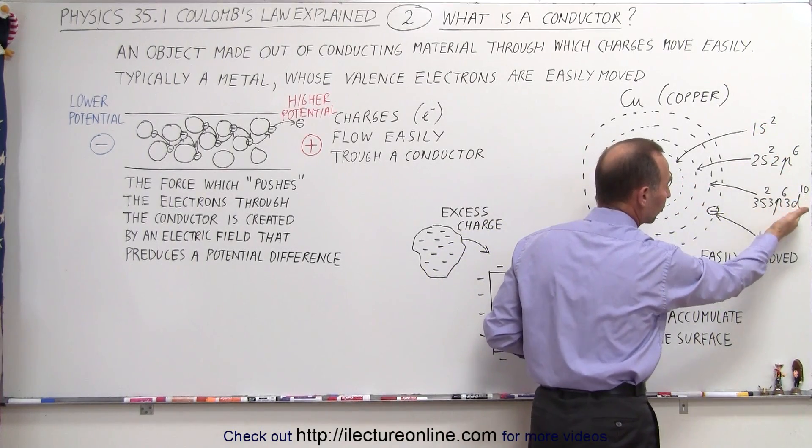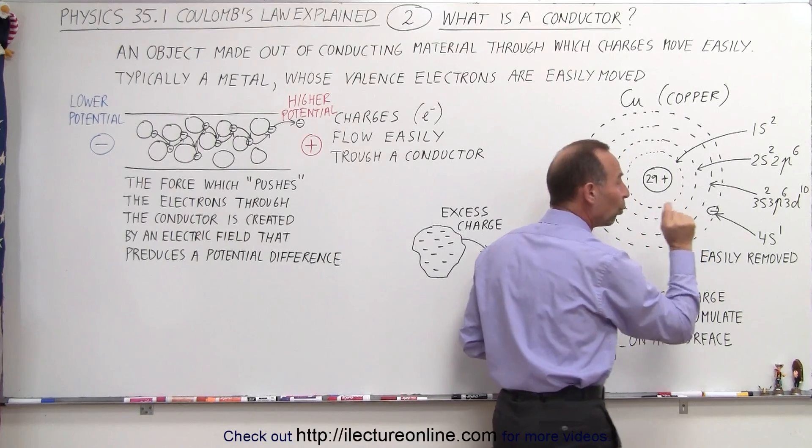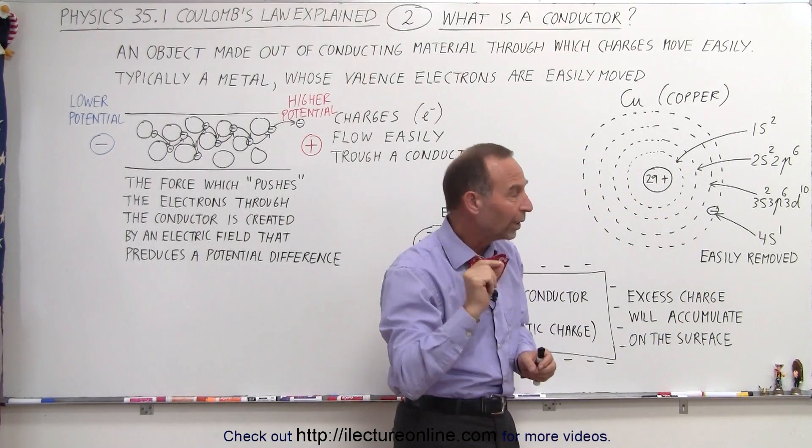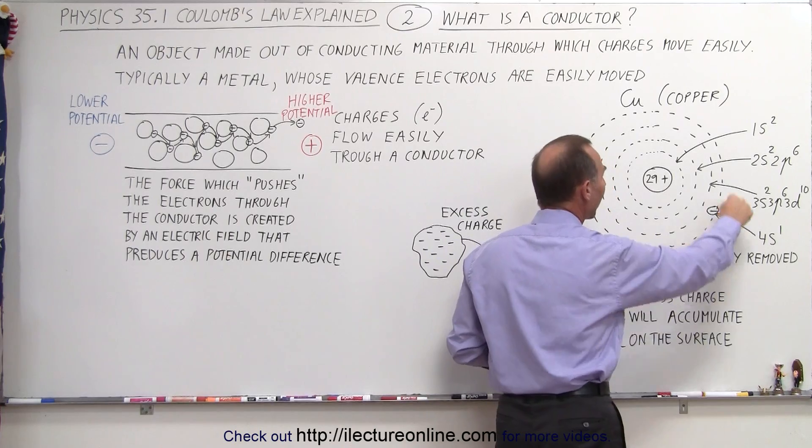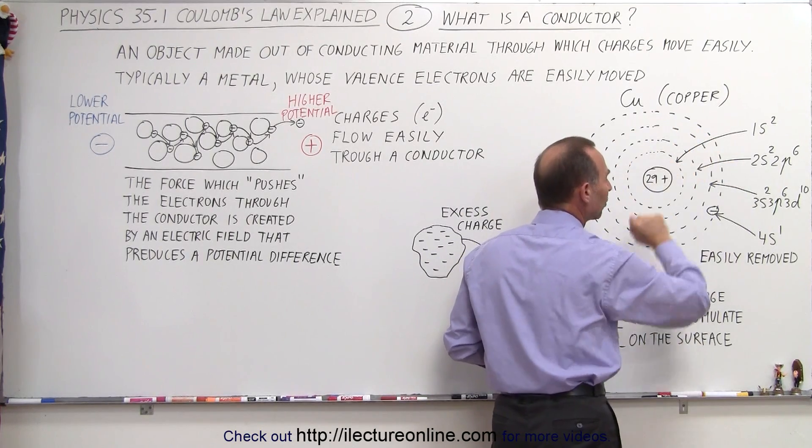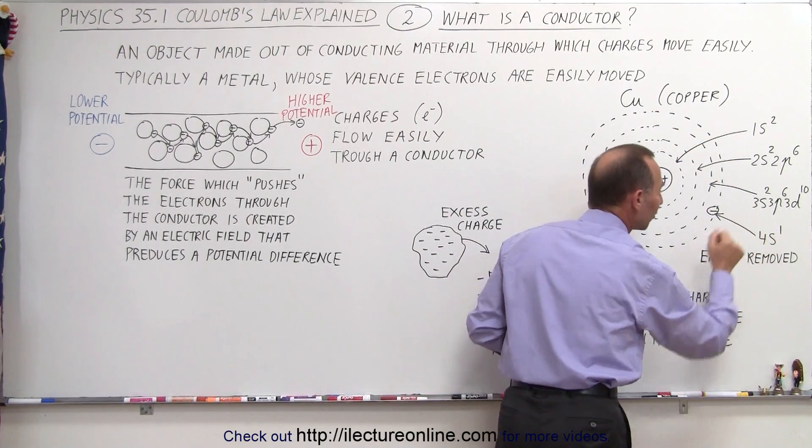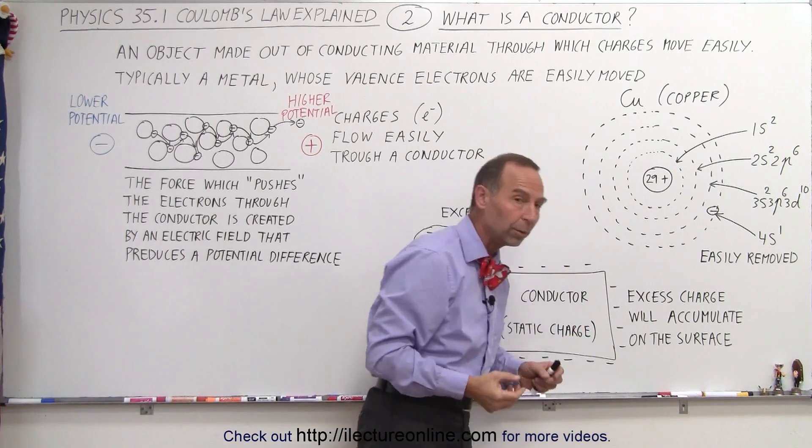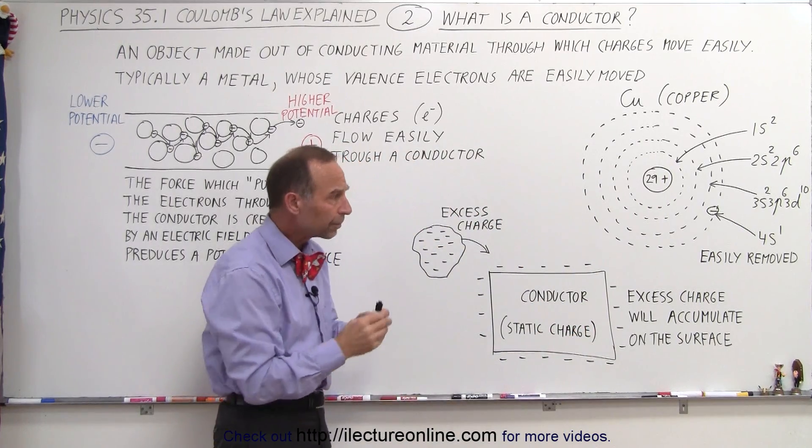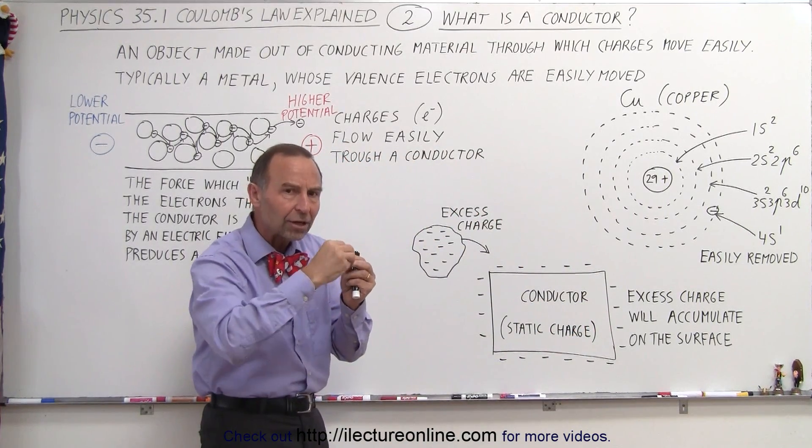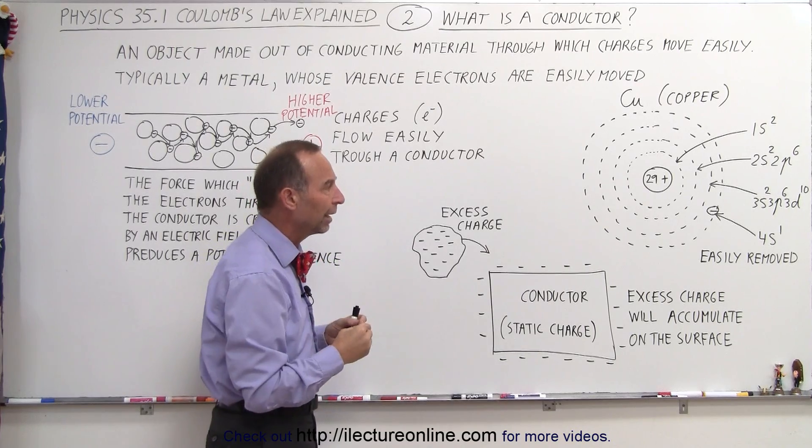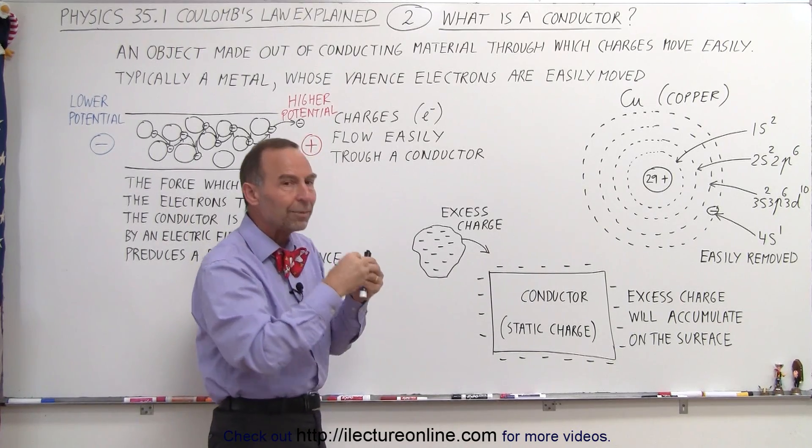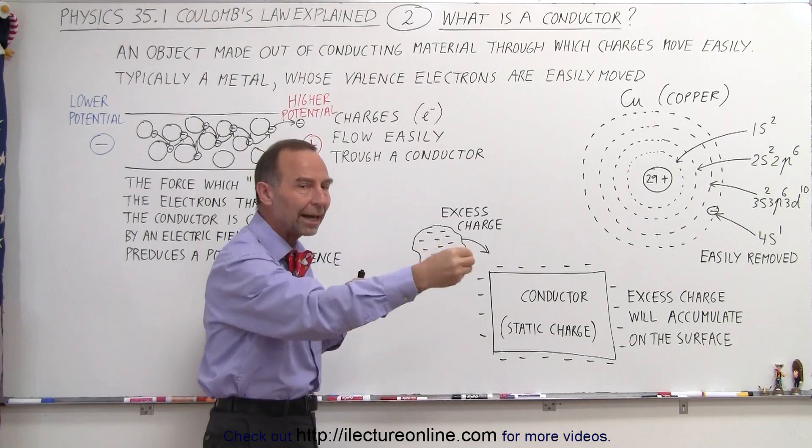This leaves one additional electron, the 29th, which all by itself occupies a space in the fourth energy level in the 4s orbital. Because of that, that electron can be easily removed, and since it can be easily removed, it can be easily moved from one atom to the next.